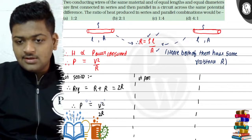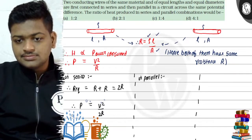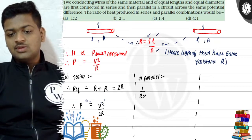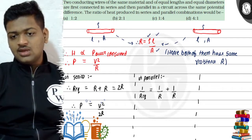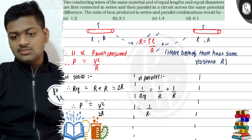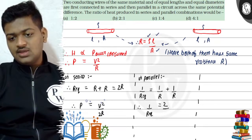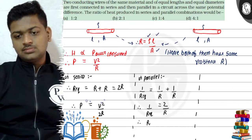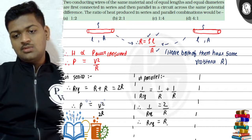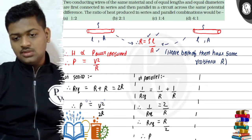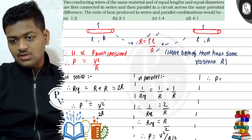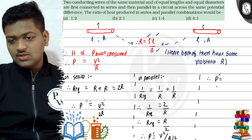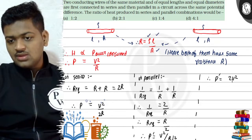Now in parallel, 1/R_equivalent = 1/R1 + 1/R2 = 1/R + 1/R = 2/R, so R_equivalent = R/2. Power in parallel is P' = V² / (R/2) = 2V²/R.